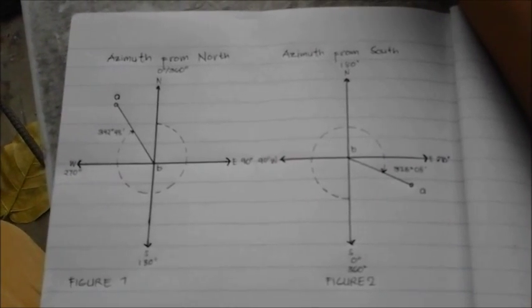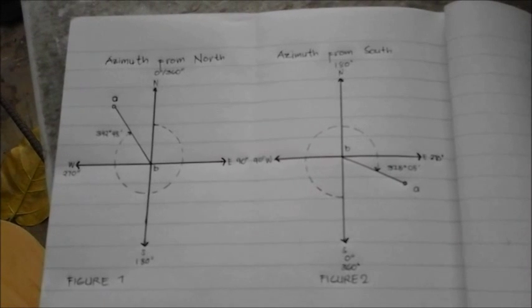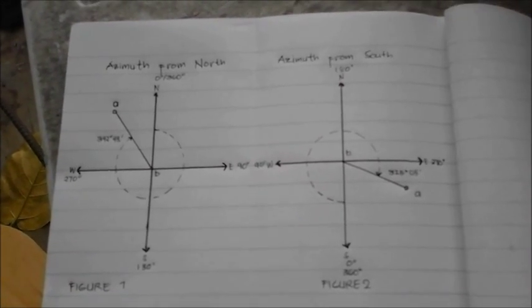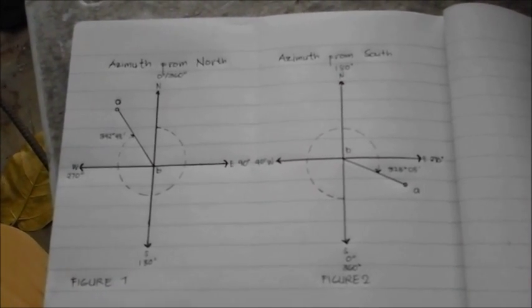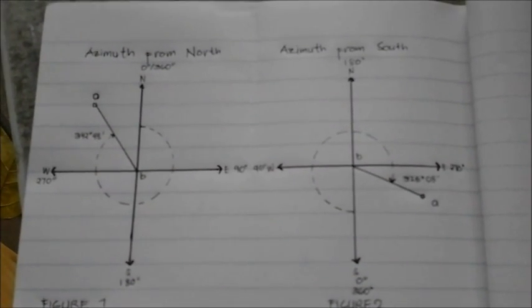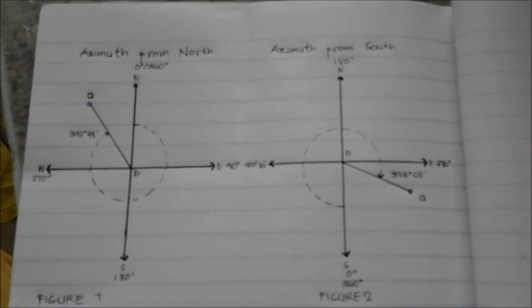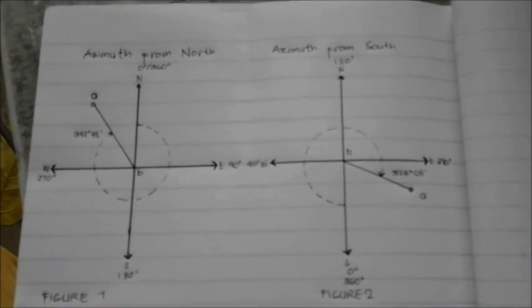Azimuths are usually preferred over bearings by most surveyors because they are more convenient to work with such as in computing traverse data by electronic digital computers. The azimuths of a line may range from 0 to 360 degrees and letters are not required to identify quadrants.